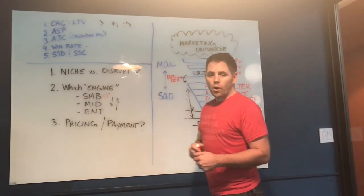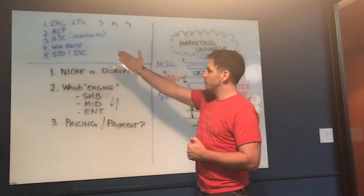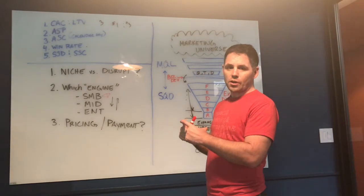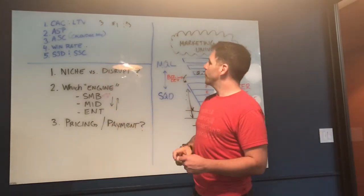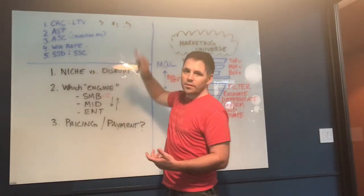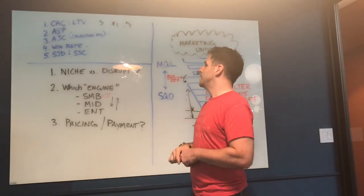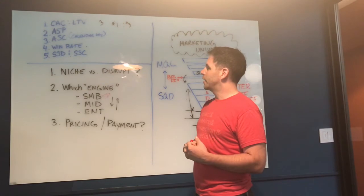If I have one metric to go off of for measuring the overall health of a sales organization or a business, it would be CAC to LTV ratio. That's your customer acquisition cost to lifetime value. The three is still the magic number. So if it costs a dollar to acquire a customer, you should set a goal of a lifetime value of three dollars.